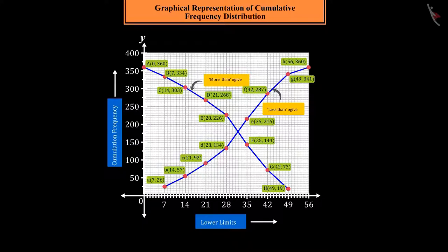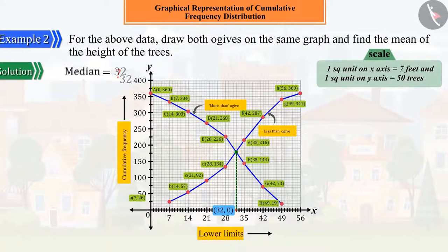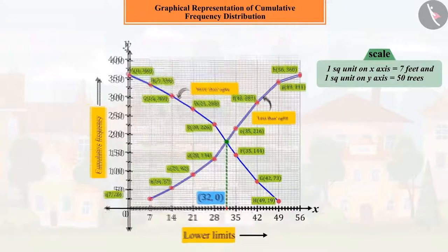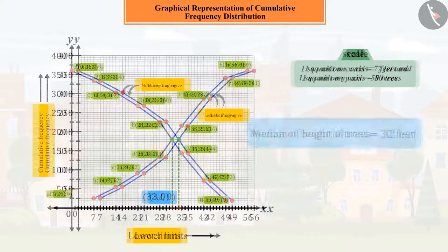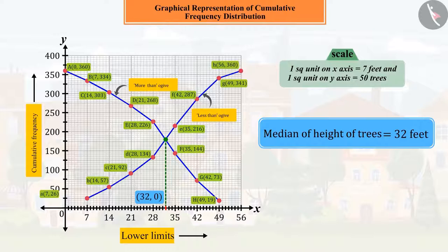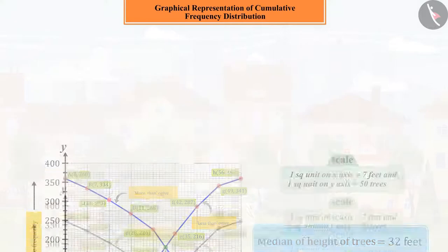If you look carefully, you can see that these two ogives intersect each other at a point. If we draw a perpendicular from this point of intersection to the horizontal axis, the point at which the perpendicular intersects the x-axis is the median of the data. Thus, 32 is the median, so we can say that the median height of the trees is equal to 32 feet.